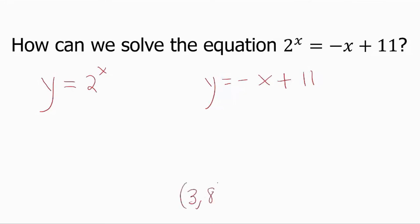The point of intersection is (3, 8). x equals 3, y equals 8. Let us verify: when x is 3, 2 to the 3 is indeed 8 — eight equals eight. And checking the linear equation: negative 3 plus 11 is also 8 — eight equals eight. The solution is x equals 3, and the function assumes the value of 8.